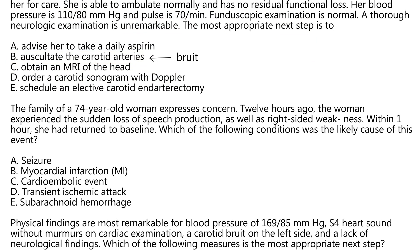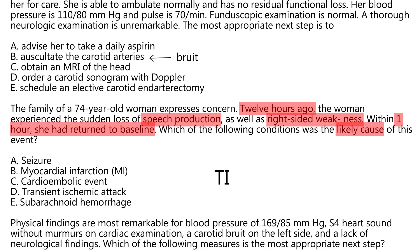Next vignette: The family of a 74-year-old woman expresses concern. Twelve hours ago, the woman experienced sudden loss of speech as well as right-sided weakness, and within one hour she had returned to baseline. Which condition was the likely cause? This is a straightforward question — she had a TIA, with symptoms that resolved in less than one hour.